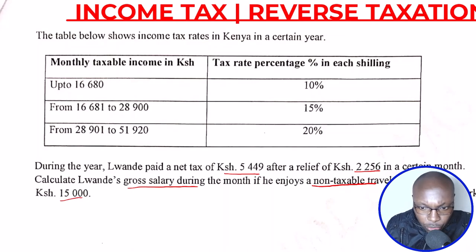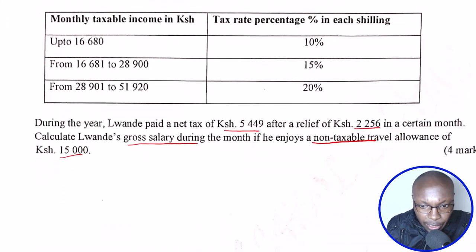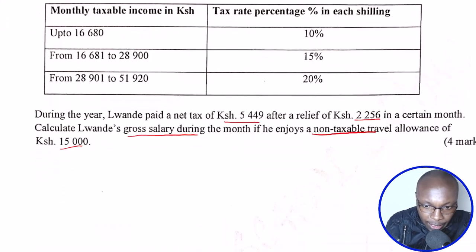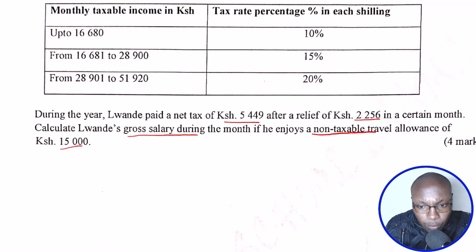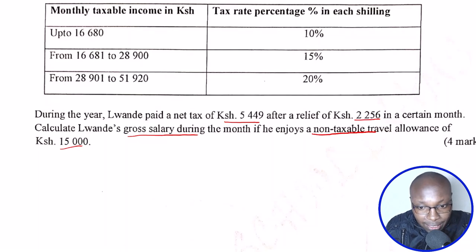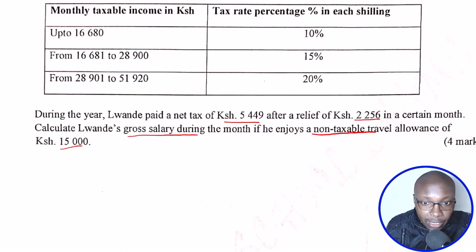To begin with, you're given the net tax, which is 5,449. Remember we are moving backwards from net tax, then we shall go to gross tax, then we get the taxable income.